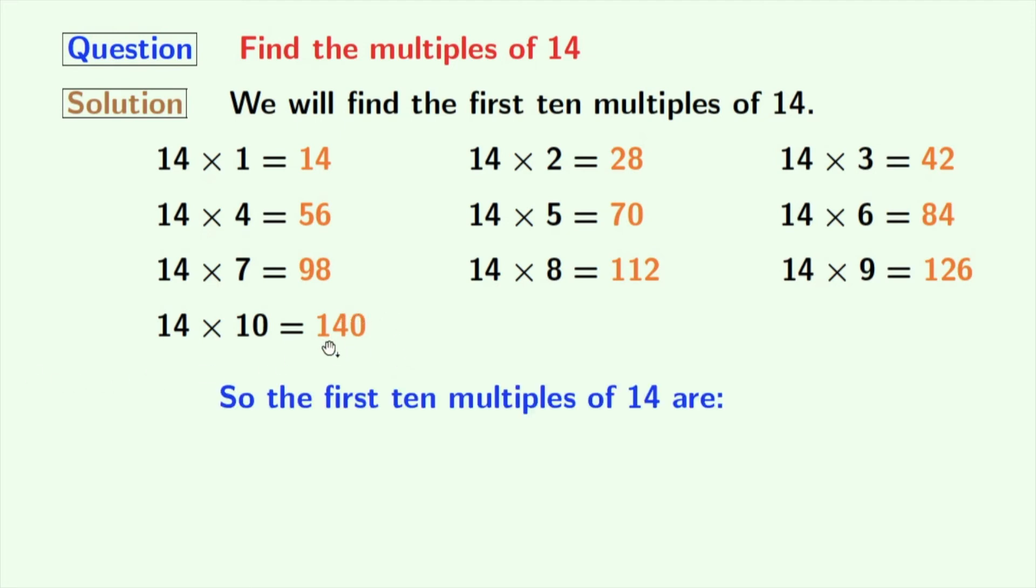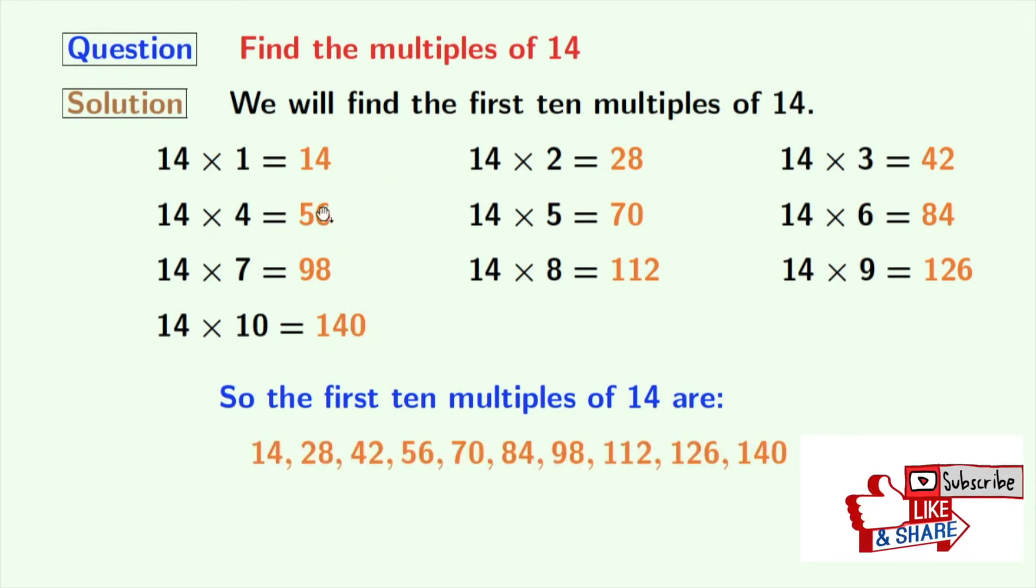Now, here are the first 10 multiples of 14, which are the orange ones. So, these are 14, 28, 42, 56, 70, 84, 98, 112, 126, and 140.